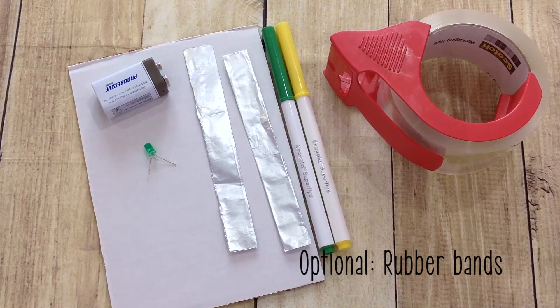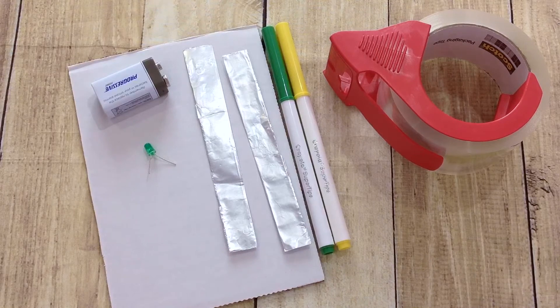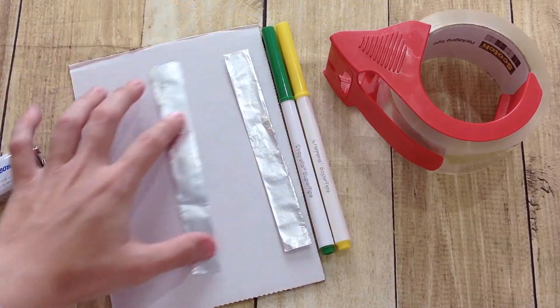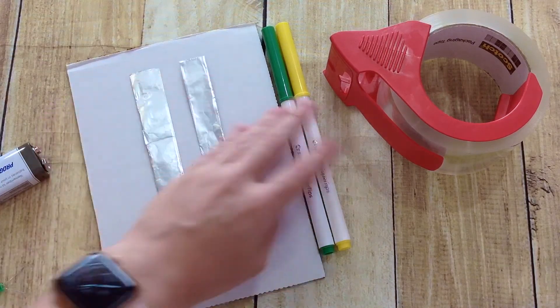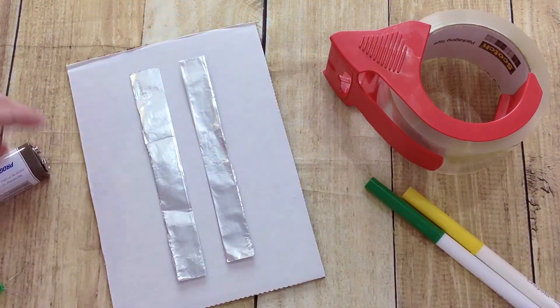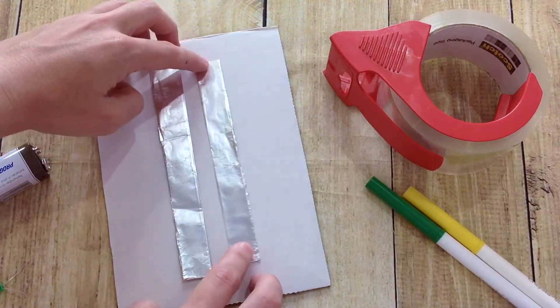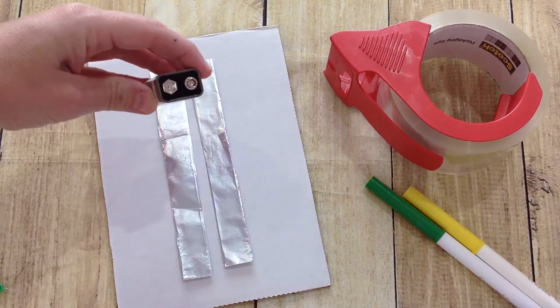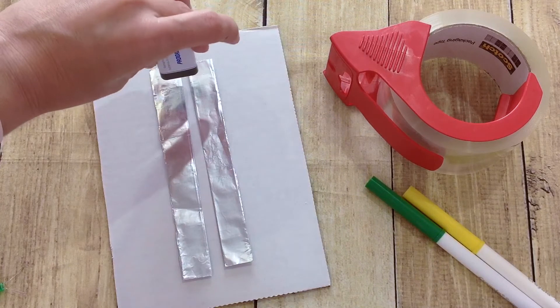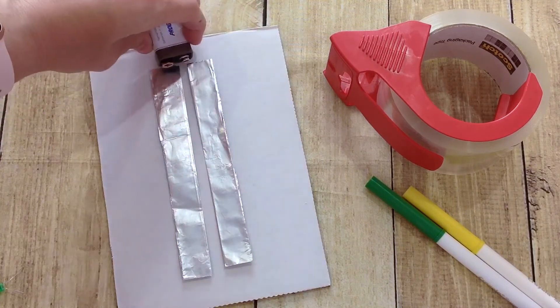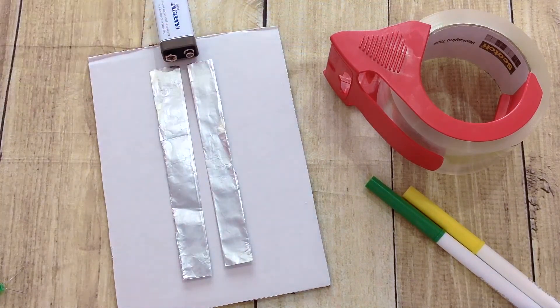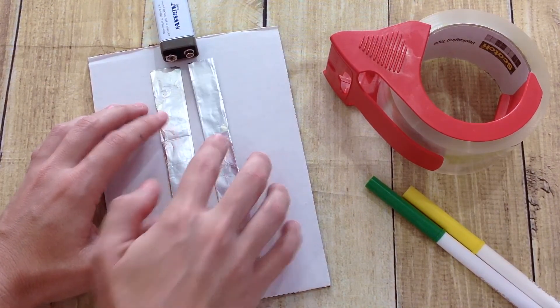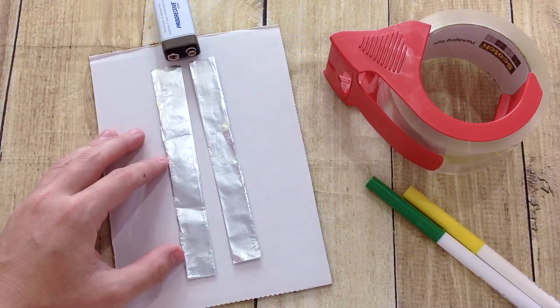Once you have all of your materials and you're ready to go, we're going to start with our cardboard and our aluminum foil. The aluminum foil strips that we cut and folded are going to be our wires. We're going to need them to be parallel to each other, but they can't touch. We need one side for the negative terminal and the other side for the positive terminal of the battery to connect. Use your battery as reference to see just how close you can get them without touching.